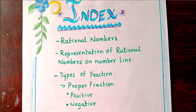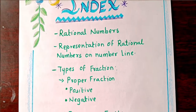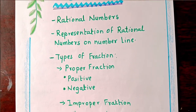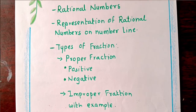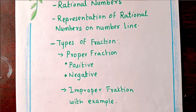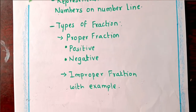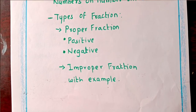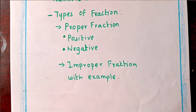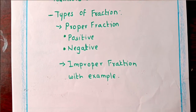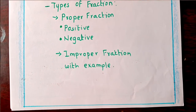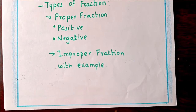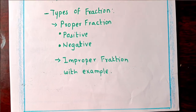The index covers rational numbers, representation of rational numbers on number line, then types of fractions — that is proper fraction, including positive proper fraction and negative proper fraction on number line — and the last one is improper fraction on number line with example.